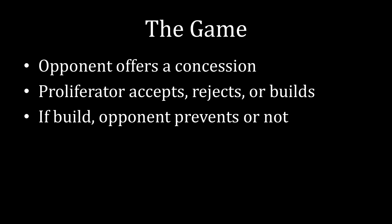In the game that we've been exploring so far, the opponent begins by offering a concession to the potential proliferator. The potential proliferator accepts those concessions and does not build a nuclear weapon, rejects and fights a war under the status quo distribution of power, or thanks the opponent for the concessions and builds a nuclear weapon anyway. And if the potential proliferator builds, then the opponent chooses whether to fight a preventive war.